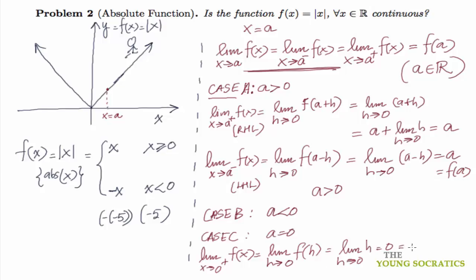Similarly, you can very easily show that this is also equal to the limit of x going to 0⁻ of f(x). Because this will be equal to limit of h going to 0, and f(x) will be f(-h). And f(-h) is |-h|, which is h. And limit of h going to 0 of h is 0 again.